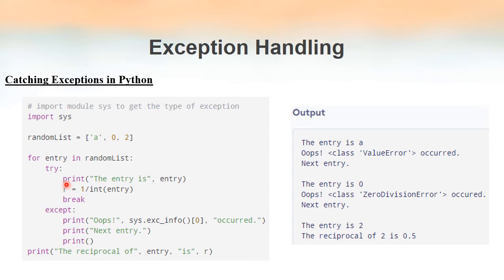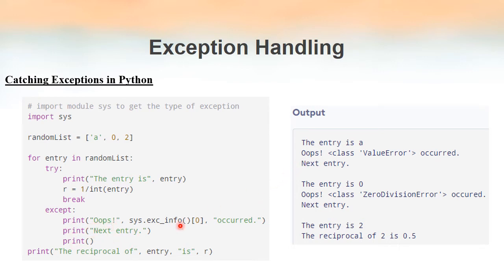Initially the value of entry is 'a'. We enter the try clause and print 'the entry is a'. Then we try to compute 1 / int('a'), but since 'a' is a character it cannot be converted to an integer for division. An exception is raised, the try block stops, and the exception is thrown to the except clause. The except clause executes: it prints 'oops', then the exception type which is 'ValueError' obtained via sys.exc_info(), then 'occurred', 'next entry', and an empty line.